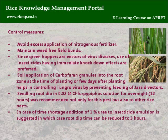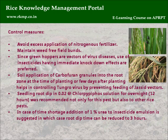Control measures: Avoid excess application of nitrogenous fertilizer. Maintain weed-free field bunds. Since green hoppers are vectors of virus diseases, insecticides with immediate knockdown effects are preferred. Soil application of carbofuran granules into the root zone at planting helps control tungro virus by preventing feeding of leafhopper vectors. Seedling root dip in 0.02% chlorpyrifos solution overnight (12 hours) is recommended for this and other rice pests. Where time is short, adding 1% urea to the insecticide emulsion reduces the root dip time to 3 hours.